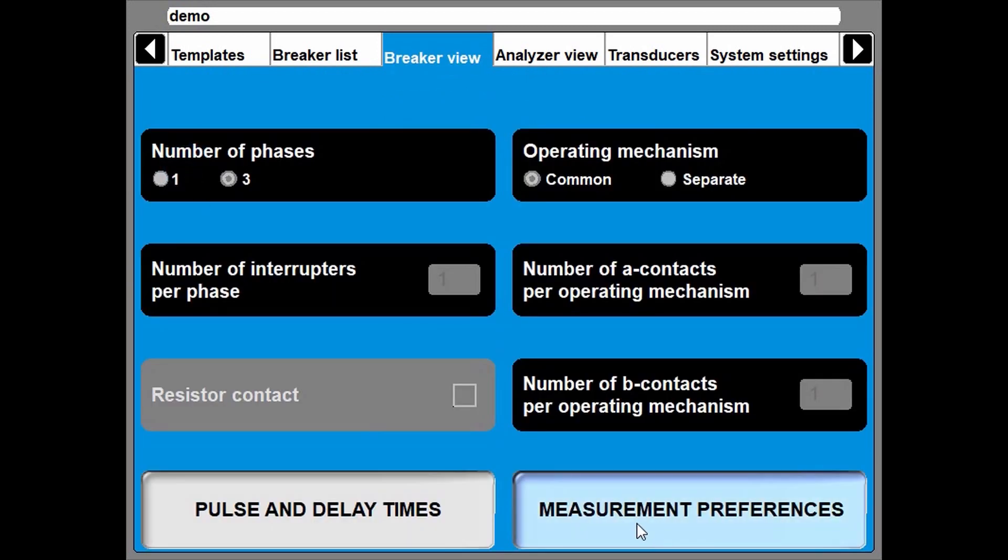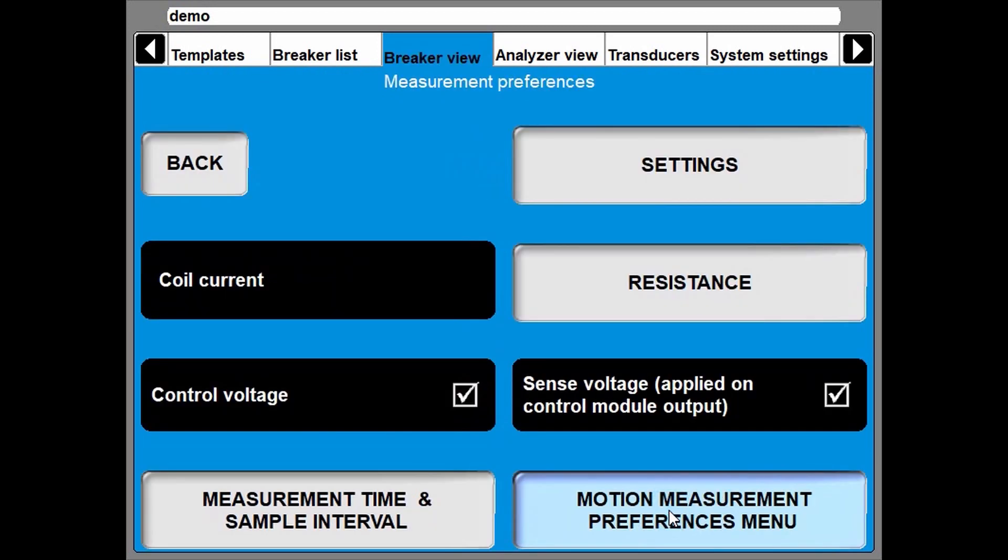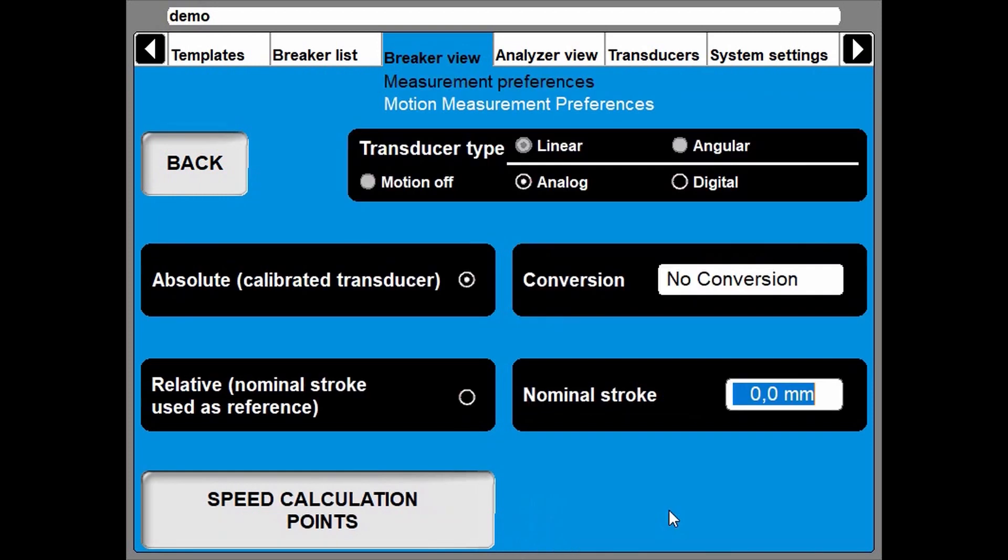I go back. And I also want to change the measurement preferences. Motion measurement preferences. I want to do a motion with a digital transducer.